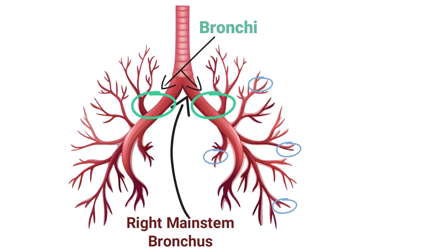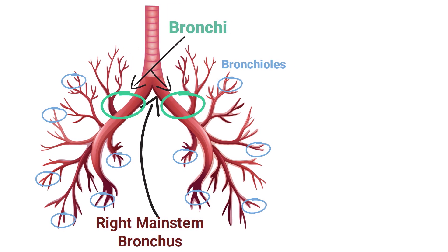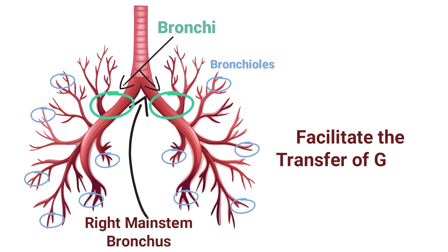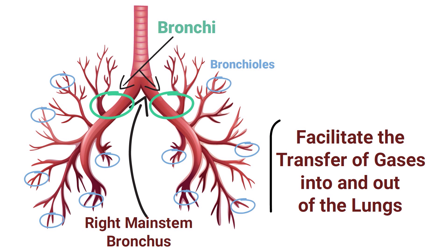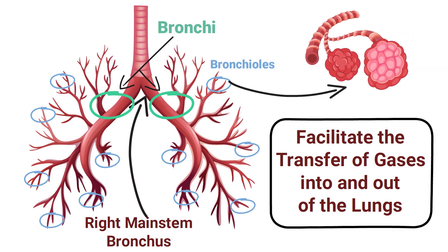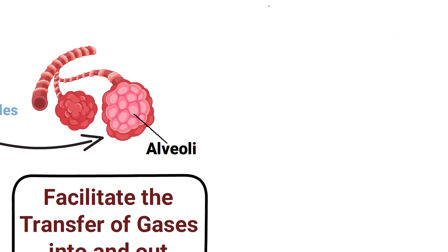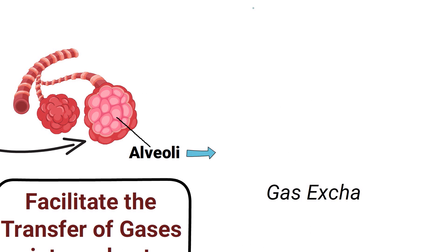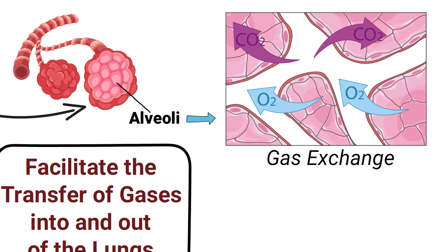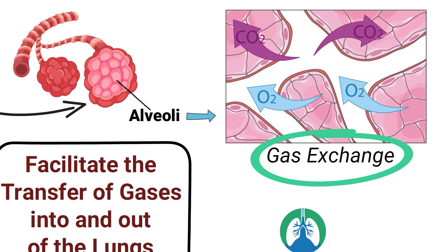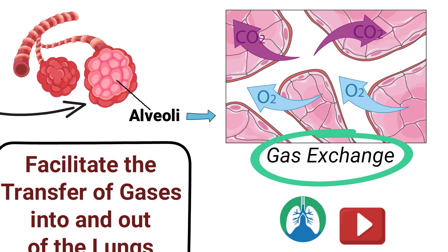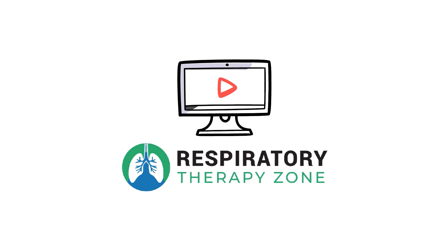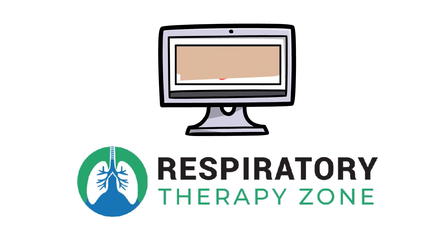Each of the bronchi will continue to branch out further inferiorly into bronchioles, which facilitate the transport of gases into and out of the lungs. The bronchioles divide into alveoli, which is the area where gas exchange of oxygen and carbon dioxide takes place. This topic has been covered in more detail in other videos on the channel.